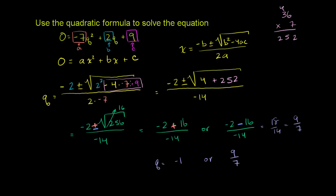If you take q equals negative 1: negative 7 times negative 1 squared—negative 1 squared is 1—so it's negative 7 times 1. Negative 1 times 2 is minus 2 plus 9. So it's negative 7 minus 2, which is negative 9, plus 9 does indeed equal 0. This checks out. I'll leave it to you to verify that 9 over 7 also works.